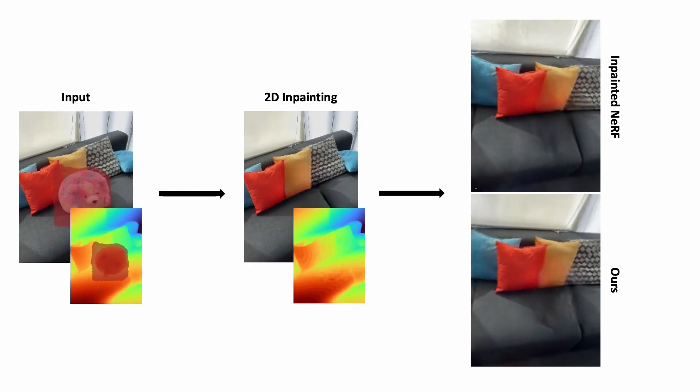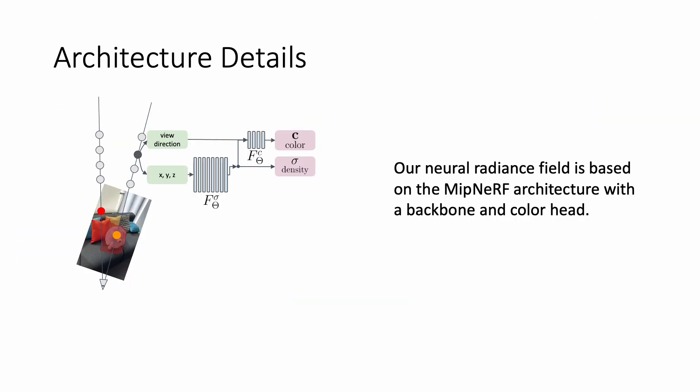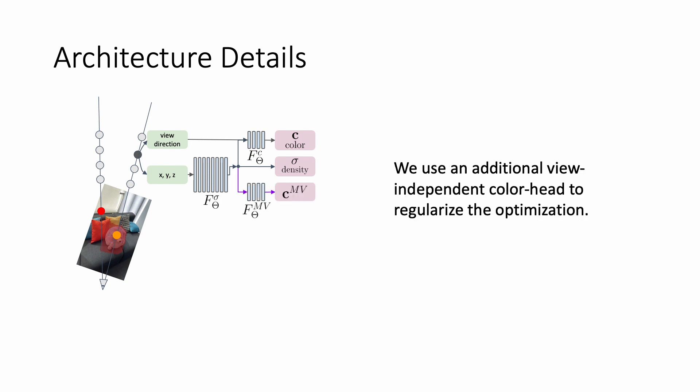Let us now have a closer look at the architecture of our neural radiance field. Our neural radiance field is based on the MipNeRF architecture, with the backbone F-sigma and the color head F-C outputting the density and the color. We augment this architecture with a second color head, F-MV, that is trained to capture multi-view consistent color.